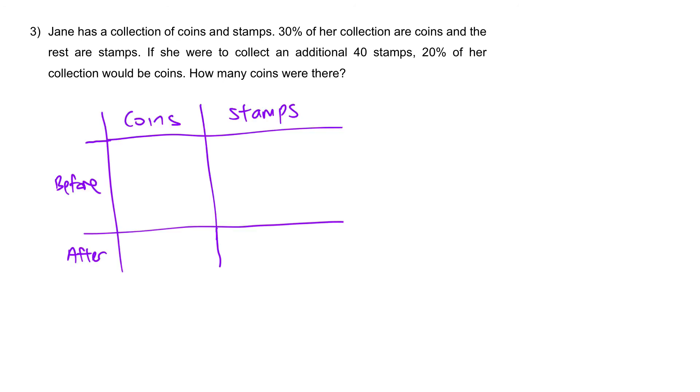At the beginning, 30%, so let's change it to fraction, 3 out of 10, after that, 1 fifth. 3 tenths of her collection are coins, so out of the entire 10 units in her collection, 3 units belong to coins. And the balance, the remaining 7 units must be stamps. So the ratio, 3 is to 7. Moving on, after receiving 40 stamps, plus 40 stamps.